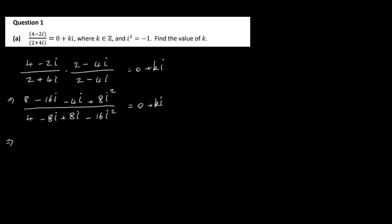If we multiply at the top here, we've got 8 minus 16i minus 4i plus 8i squared. On the bottom, we end up with 4 minus 8i plus 8i minus 16i squared. Again, that's equal to 0 plus ki. Now doing the top: we have an 8 and then plus 8i squared. Since i squared is minus 1, the plus 8i squared becomes minus 8, so the 8 and minus 8 cancel, and the top is just minus 20i.